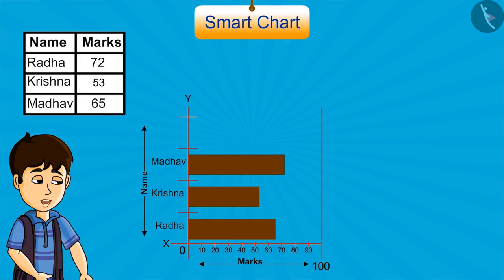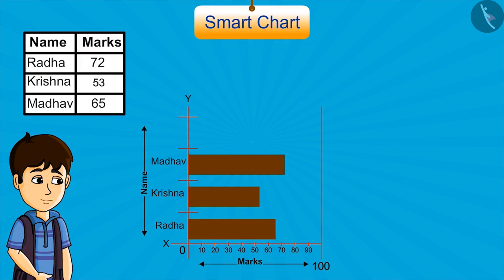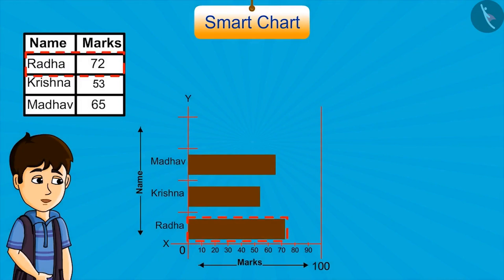You can see that according to the chart, Radha got 65 and Madhav got 72. This is very unfair with Radha. We cannot show wrong data like this. Now see — this Smart Chart is perfect because it is showing the correct marks scored by students.